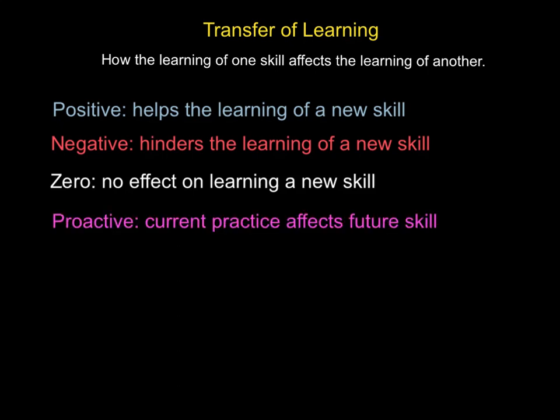Proactive transfer is where we're going forwards in time — your current practice could affect the learning of a future skill. We don't know yet whether it will help or hinder. For example, a cricketer who is a batsman thinking of taking up baseball: the cricket technique is going to have some impact on batting in baseball, and going forwards onto the new skill is known as proactive transfer.